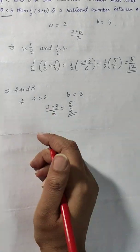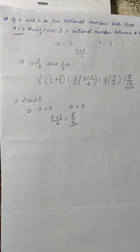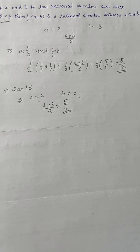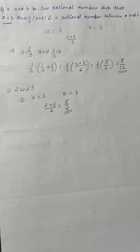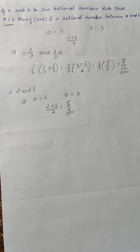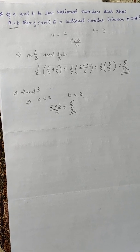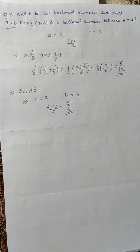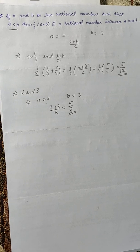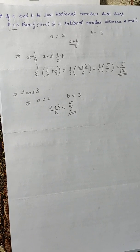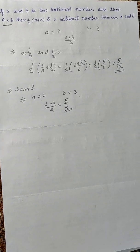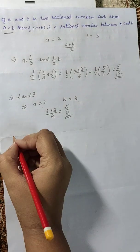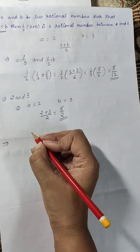With this formula, you can easily find up to three rational numbers between two given numbers. However, if the question asks for five, six, or seven rational numbers, it becomes more difficult. In the next video, I will teach you a new formula — not in your book — that makes finding five or more rational numbers much easier.